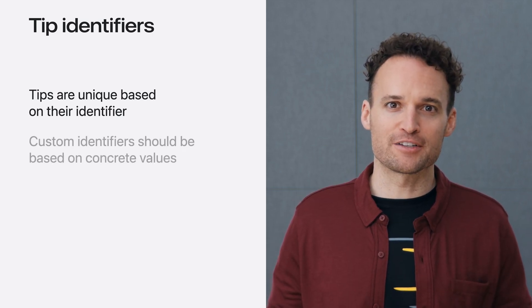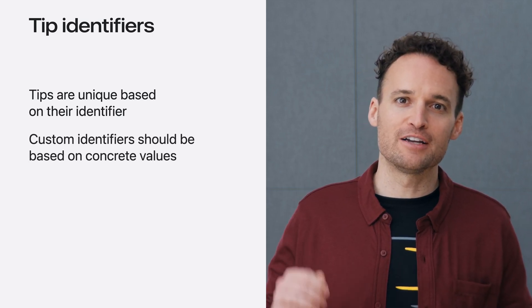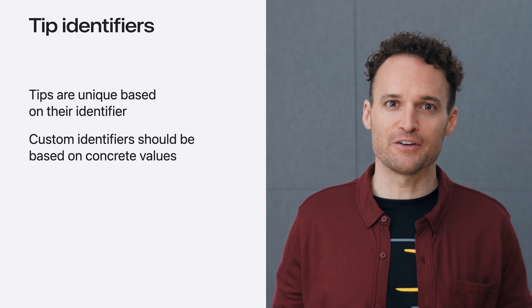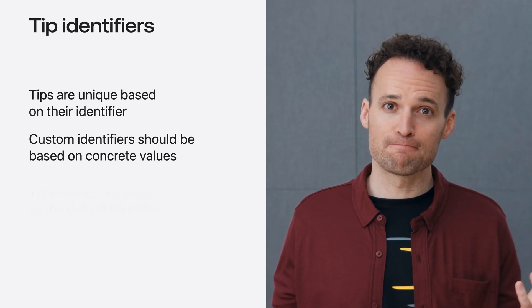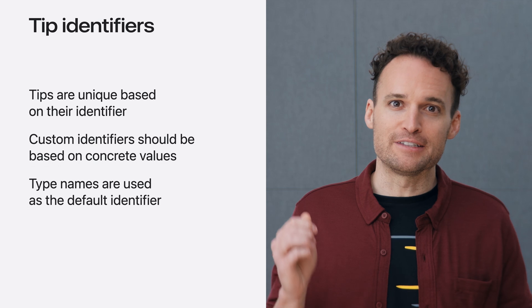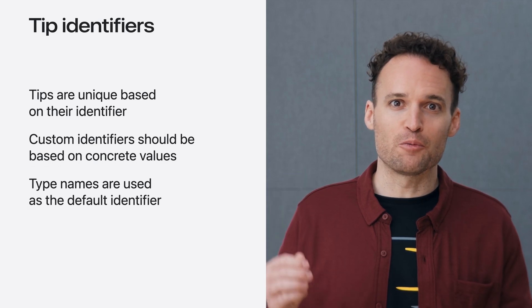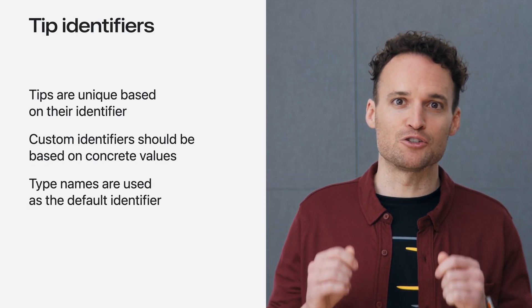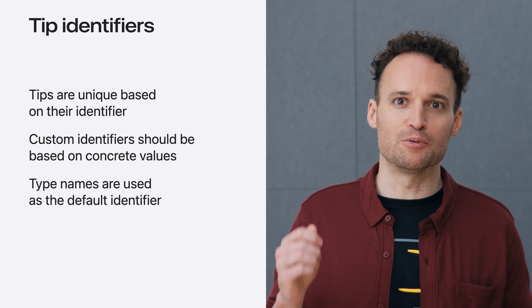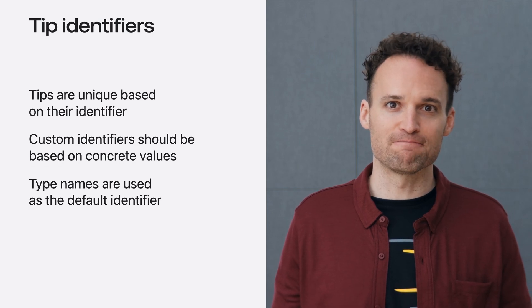That's why when you specify a custom identifier, it's important to base it on something concrete, like a user ID or a trail name. By default, a tip's identifier will be the type name used to initialize it. Overriding that ID allows your tips to be reused based on their content. Custom identifiers are a great way to have TipKit reuse the same tip model for different tips.